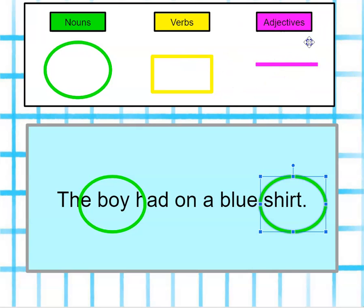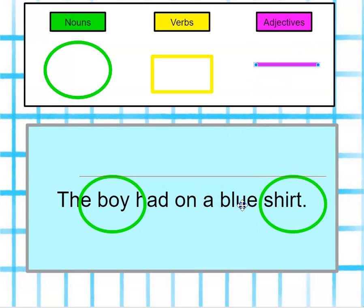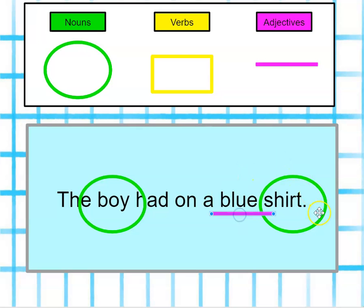Adjectives — do I see any words that describe a noun? I see blue. It's describing our shirt. The shirt is blue, so blue is our adjective. Let's try another.